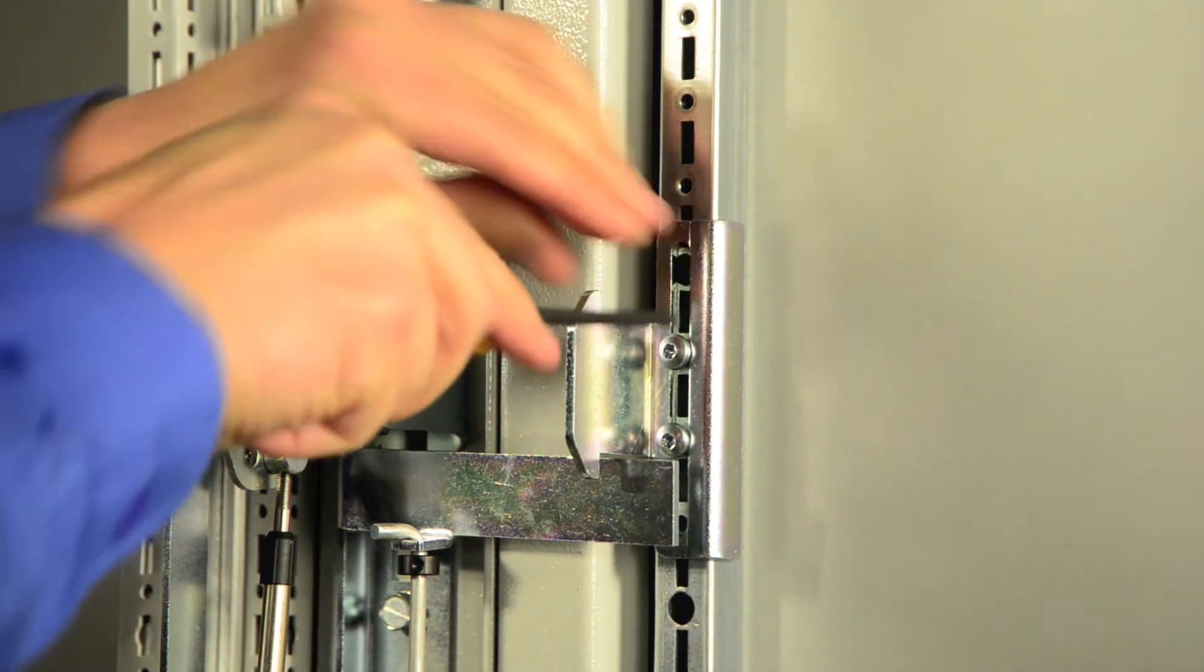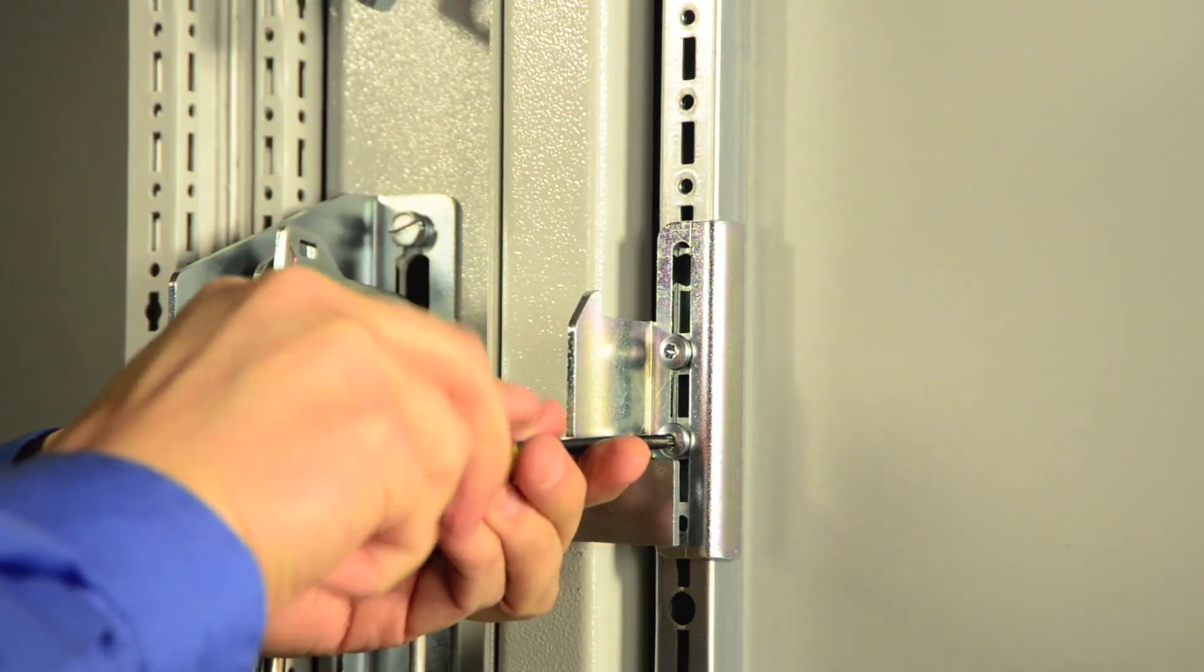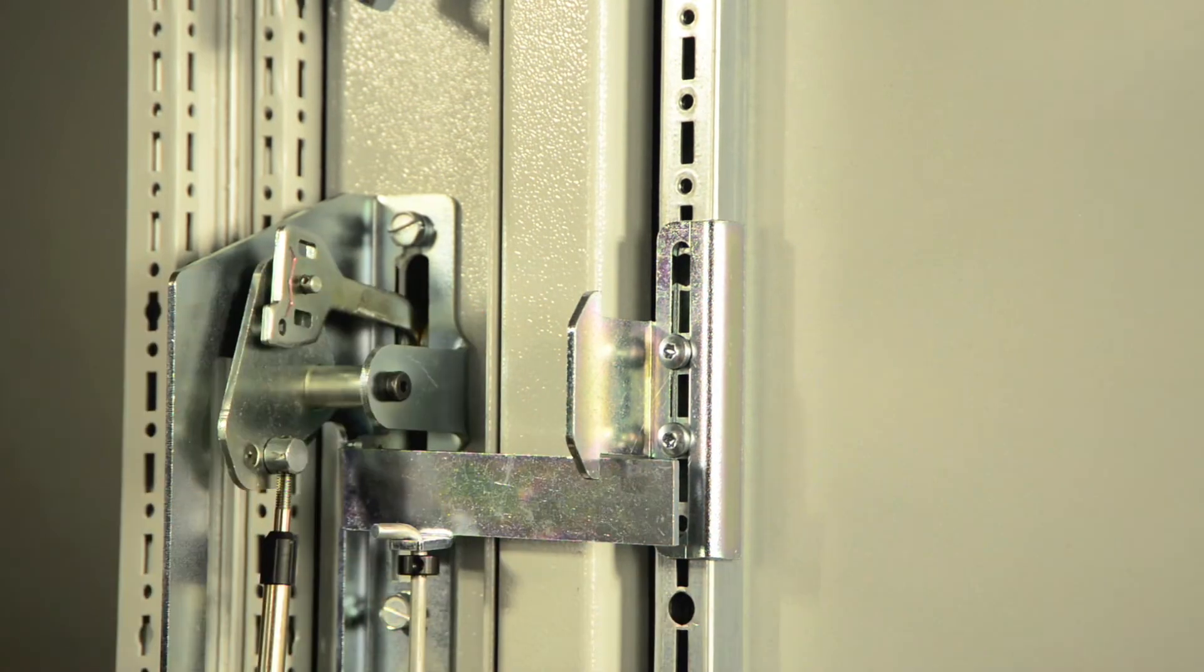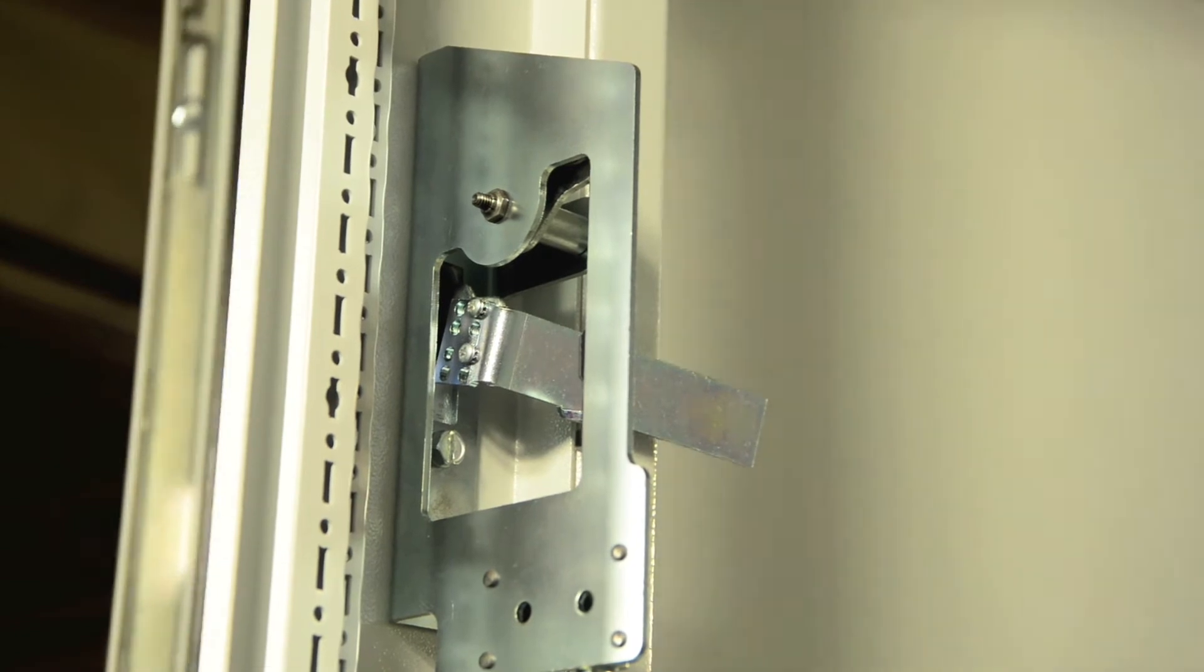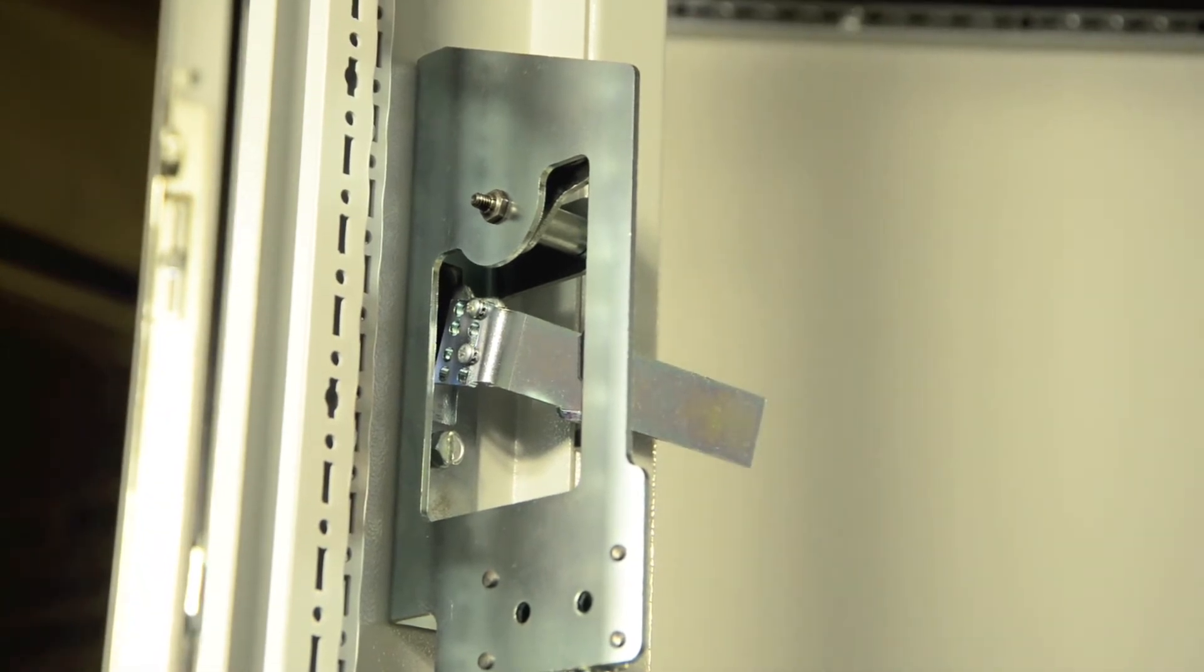Turning the handle off should lower the defeater lever and allow the door to open. If the door will not open when the handle is off, raise the door catch to a slightly higher position.